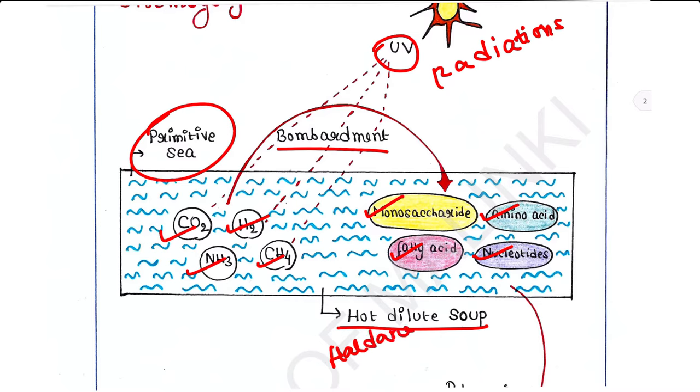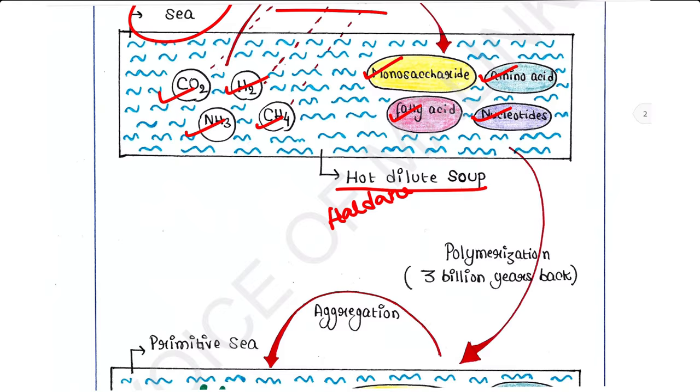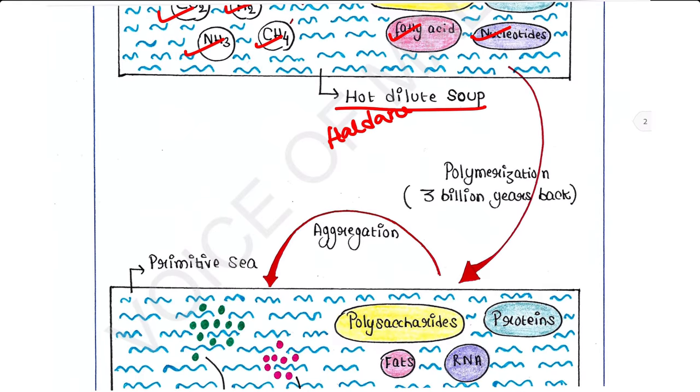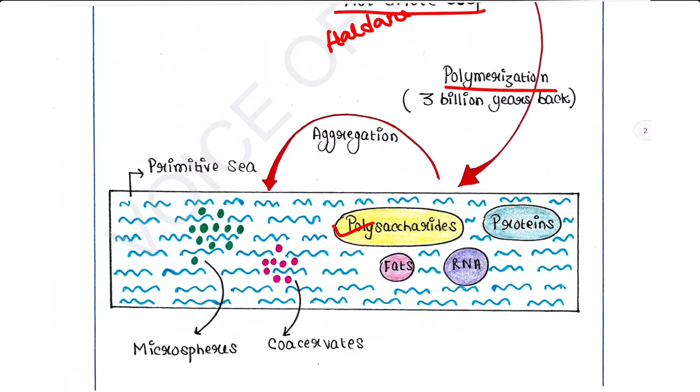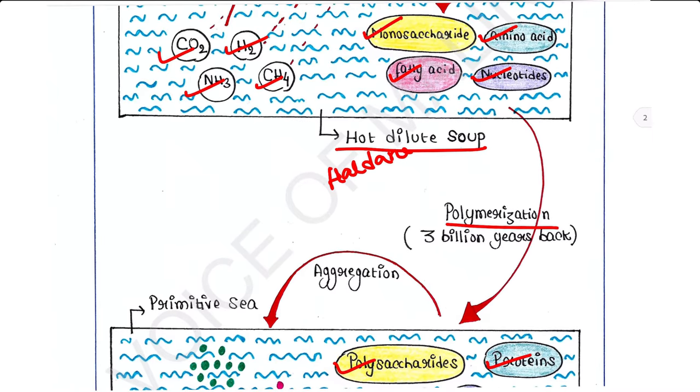Three billion years back, in the hot dilute soup described by Haldane, these molecules underwent polymerization and formed complex molecules such as polysaccharides, fats, proteins, RNA, etc. These are more complex molecules which arose from simple molecules like monosaccharides, amino acids, fatty acids, and nucleotides via polymerization reaction.